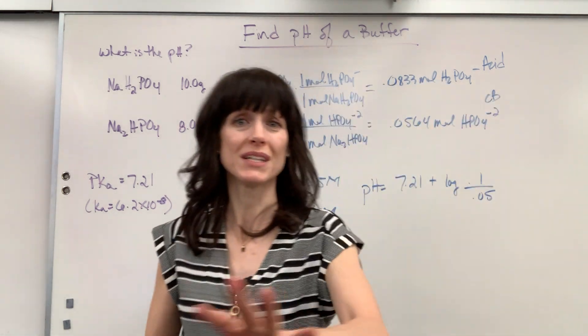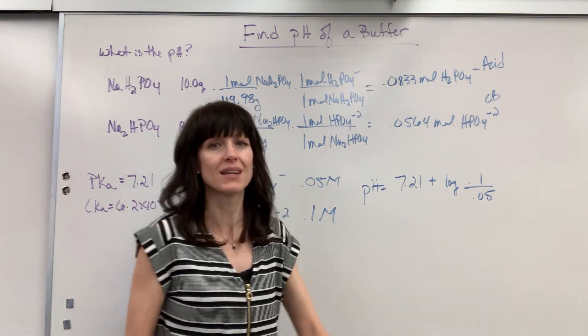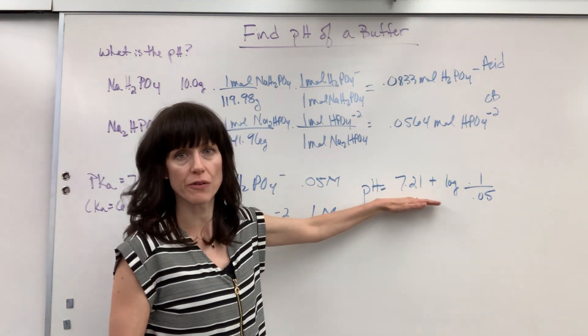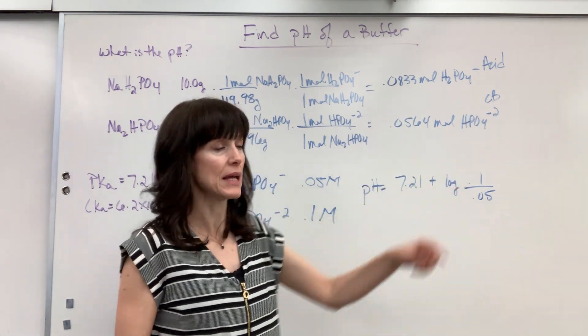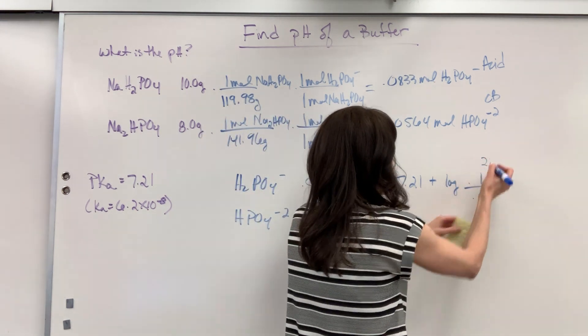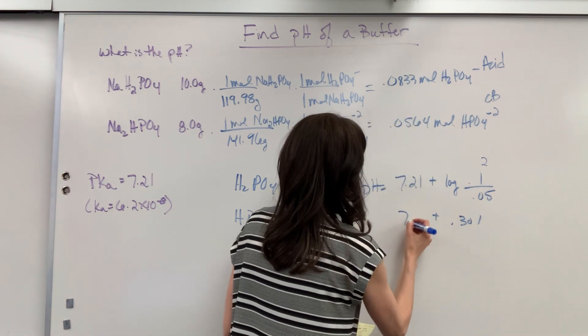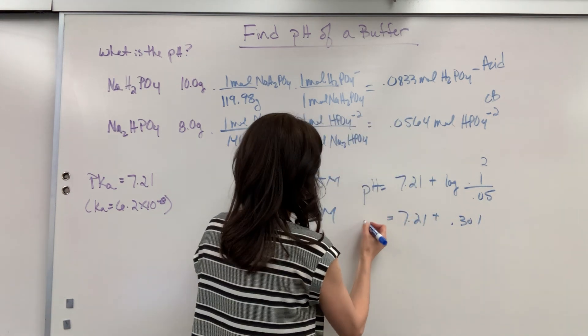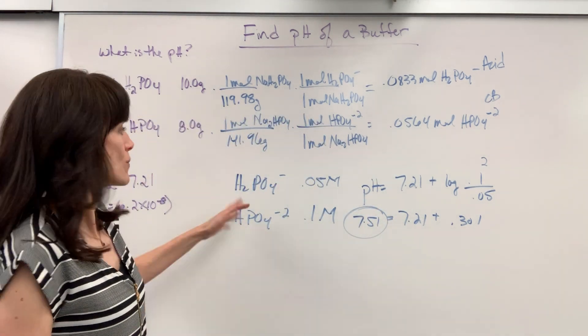Again I want to ask you, predict without doing any math. I have more conjugate base than acid so the pH going to be greater or less than 7.21. Well if I have more base I predict it's higher. It's going to be a higher pH. So divide this it's 2. The log of 2 is 0.301 plus 7.21 so the pH is 7.51. Yep it's greater. It's greater. So easy.